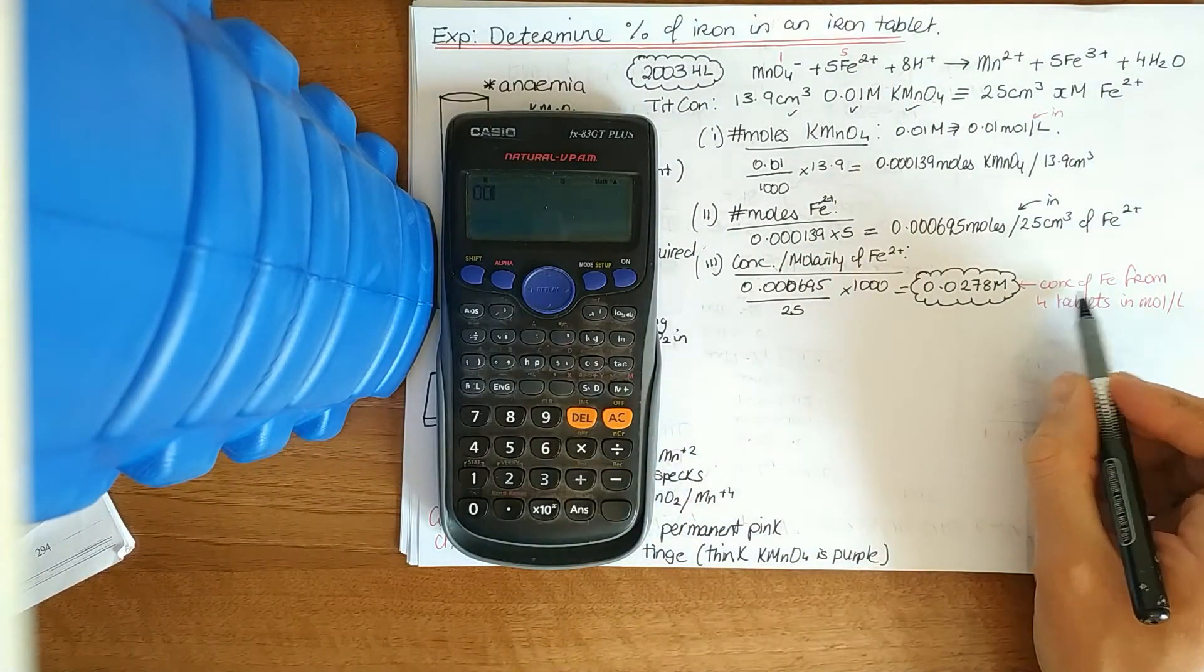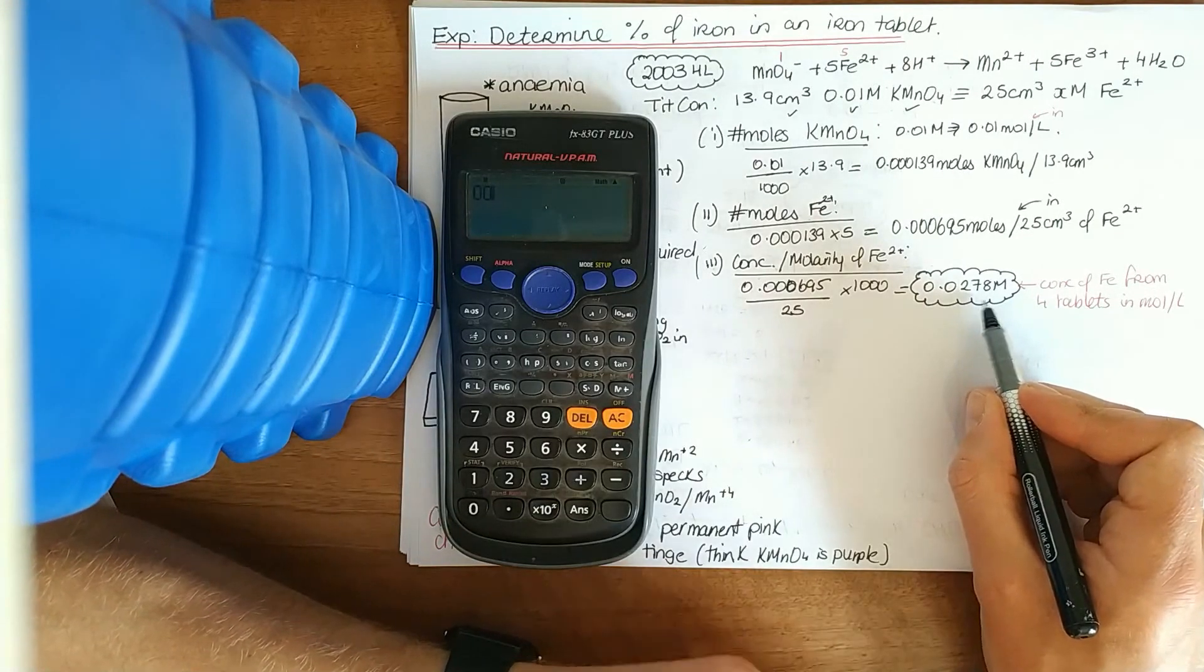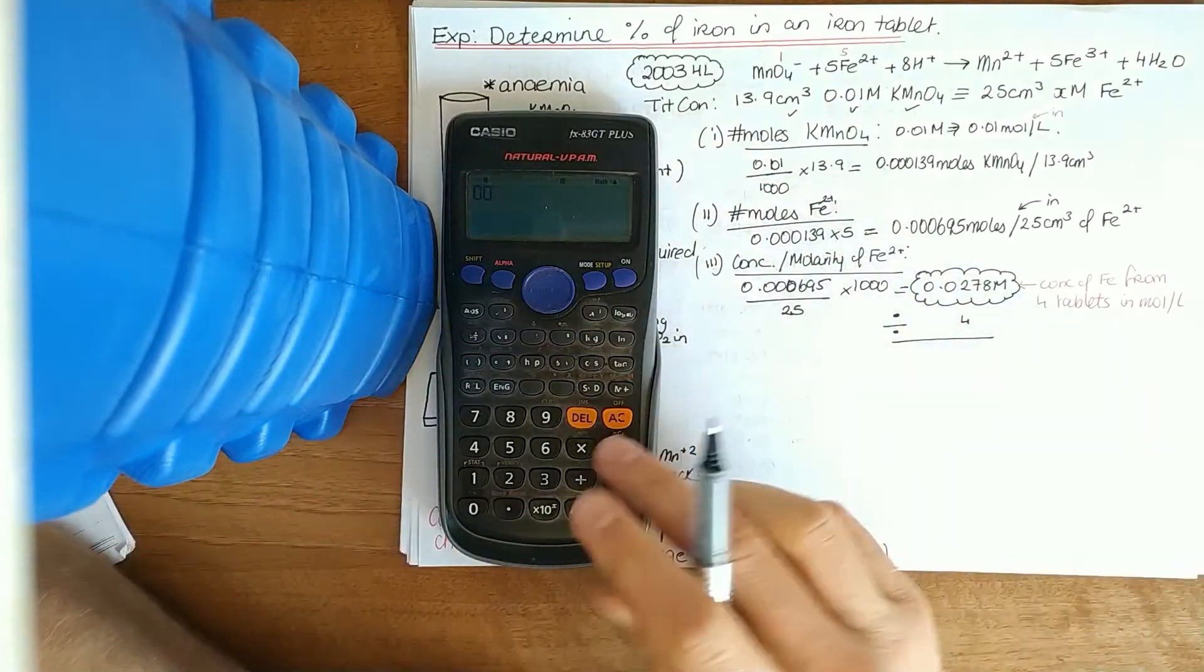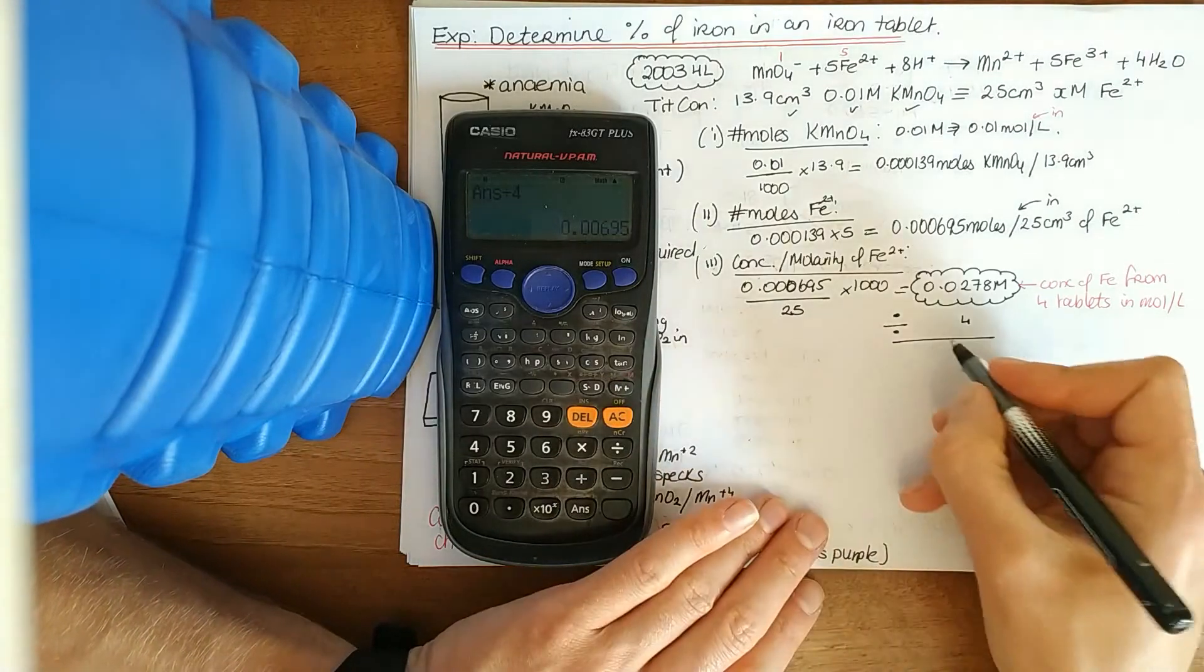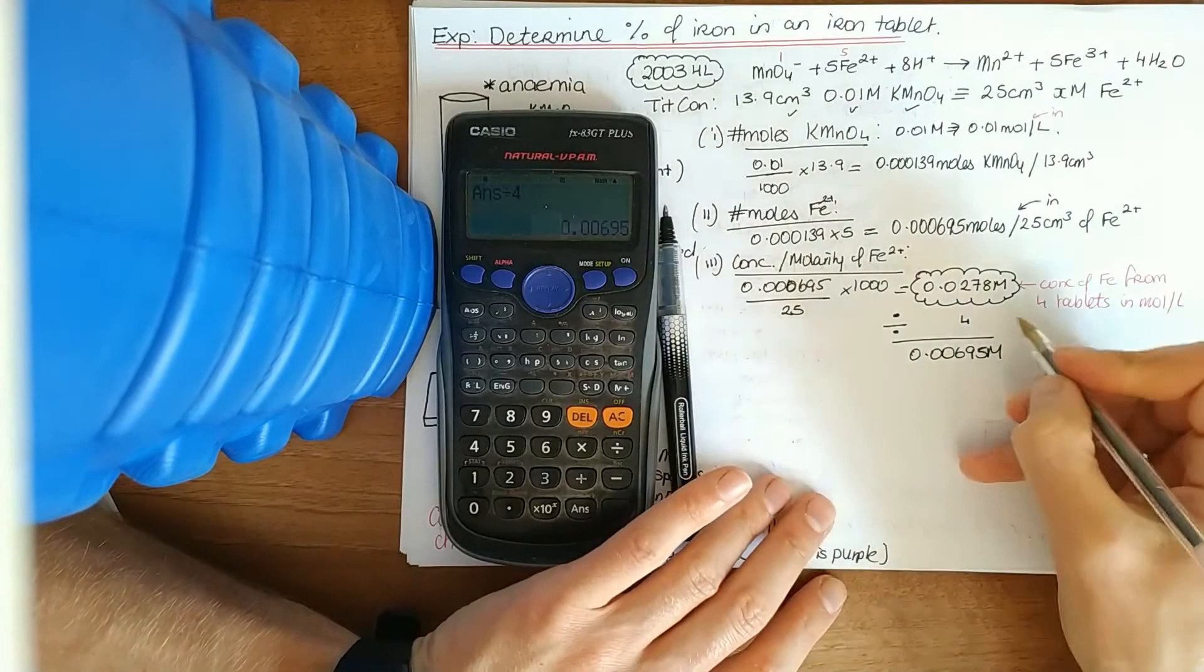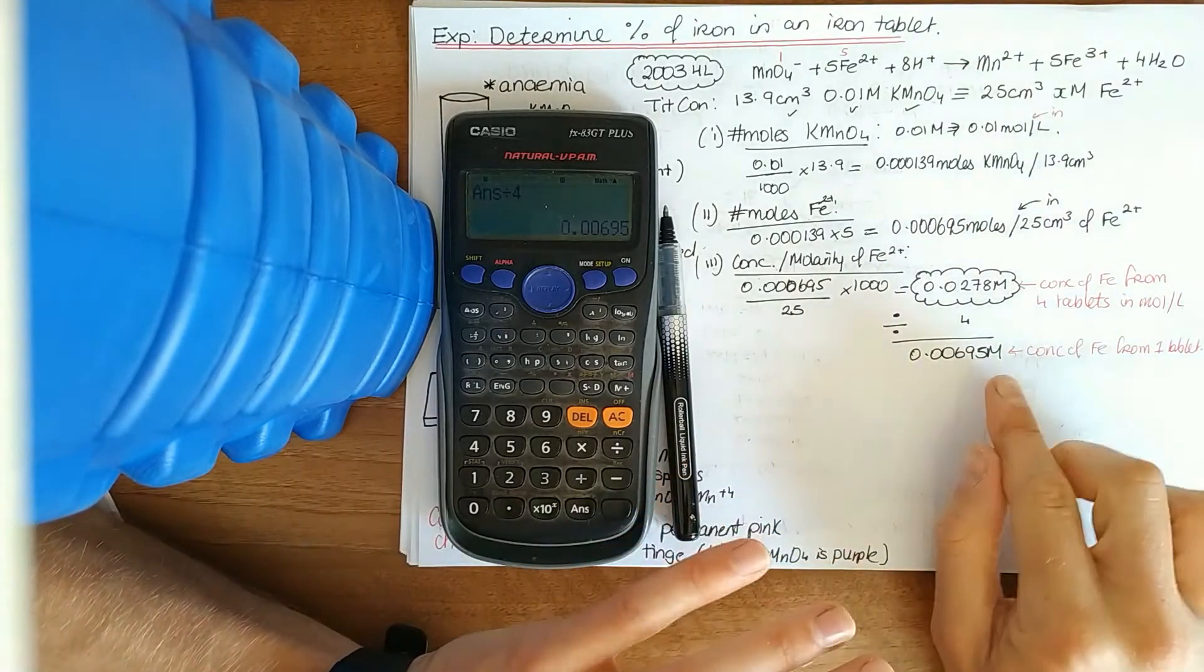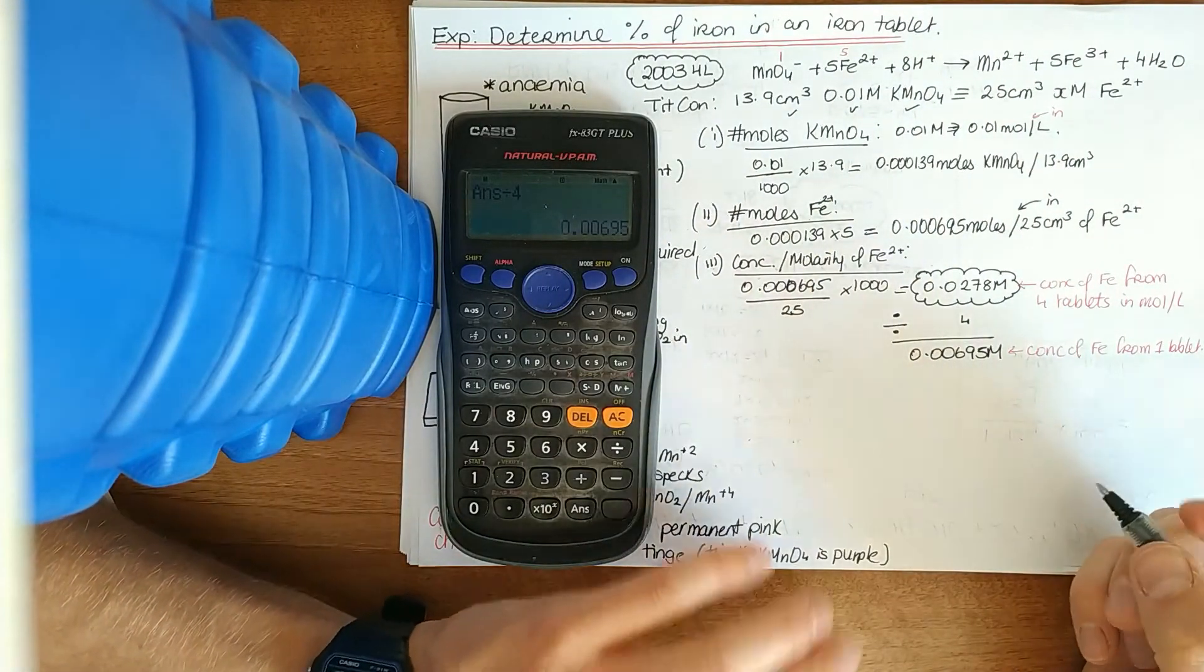To make up 250 centimetres cubed, because at the minute we're in litres. This is the concentration of iron from four tablets in moles per litre. That would be that answer for the concentration of iron 2. That's the concentration of iron from four tablets. For one tablet then, I divide by four. So 0.00695 big M, but that's the concentration of iron from one tablet now.